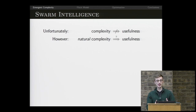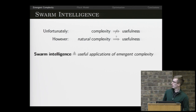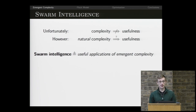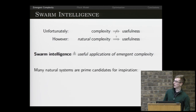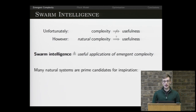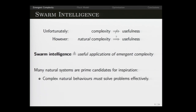There is a good reason that this algorithm is efficient. At this point I'm going to define swarm intelligence as the useful subset of systems that exhibit emergent complexity. We've discussed why natural systems in particular are good candidates for this, because they must solve some sort of problem — but there are a few other reasons as well.